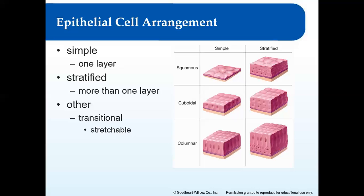Simple cuboidal epithelium has a single layer of cuboidal cells. It surrounds tubules in the kidneys and is present in secretory glands. These are typically involved in secretion or absorption — substances need to move through those cells easily and quickly. In the kidney tubules we find filtration, so things can move in and out quickly. Simple columnar epithelium has a single layer of columnar cells, found in the lining of ducts in the kidneys, and in the stomach and intestines.